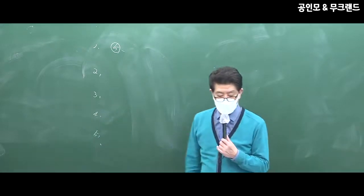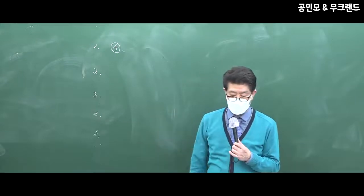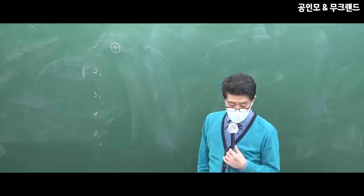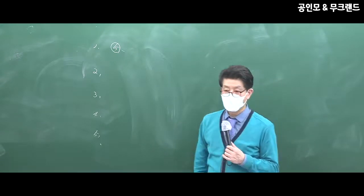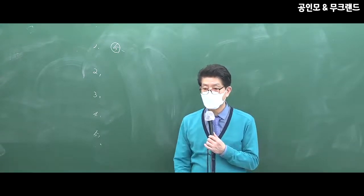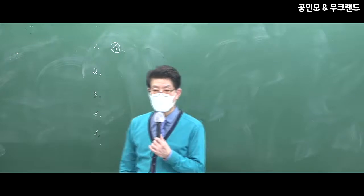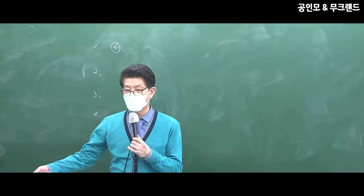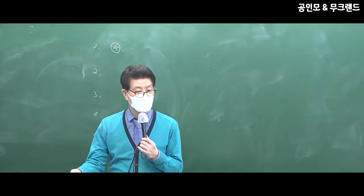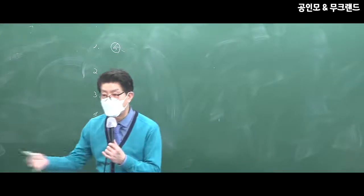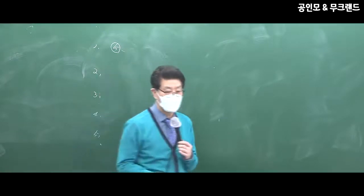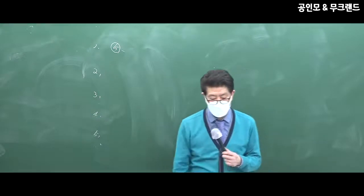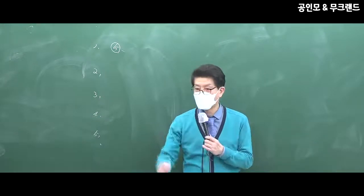그 다음 2번으로 들어갑니다. 양도 및 취득시기가 틀린 것은 4번입니다. 수용의 경우 소유권 이전 등기 접수일, 수용 개시일, 대금 청산일 중 빠른 날이에요. 뭔지는 모르지만 하나 둘 셋 중 빠른 날이니까 찍을 게 4번밖에 없죠.